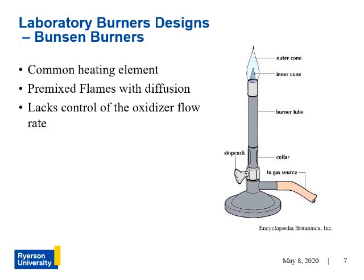Bunsen burners are readily available off the shelf from many different suppliers and are commonly used as a laboratory heating element. Although the fuel choice can easily be altered, the oxidizer is restricted to ambient air. Bunsen burners also create a pre-mixed flame rather than non-premixed — the collar above the fuel valve rotates to allow ambient air to enter the burner tube to create a hotter flame optimal for heating. Overall, this style of burner lacks separate control of the oxidizer.